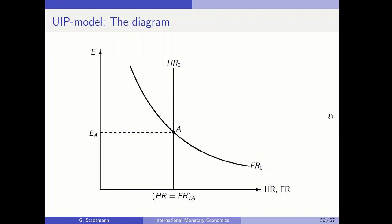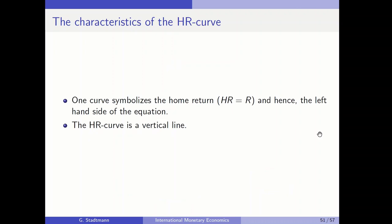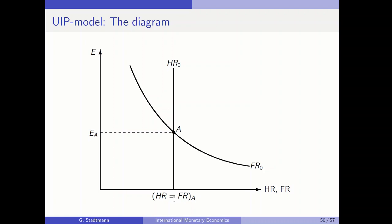We need to look into the equations once more. One curve symbolizes the home return, the left-hand side of the UIP condition. The home return curve is a vertical line because it does not depend on the exchange rate. For example, if the domestic central bank sets the interest rate to five percent, we locate five percent on the horizontal axis and draw a vertical line representing the home return.